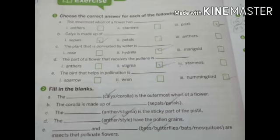Fill in the blanks. A: The blank is the outermost whorl of a flower. Answer is Calyx. Number B: The corolla is made up of - Answer is Petals.